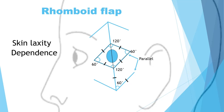The second thing to think about is dependence. Dependence is where the base of your flap is superior and your flap is pointing downwards or inferiorly. What will happen then is your flap will get congested and pincushioned — this is called dependence, and we try to avoid it where possible.